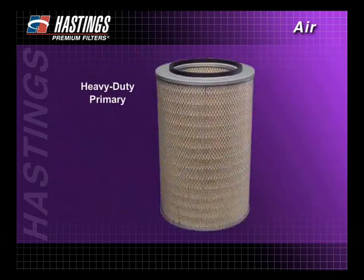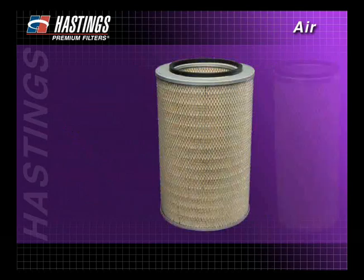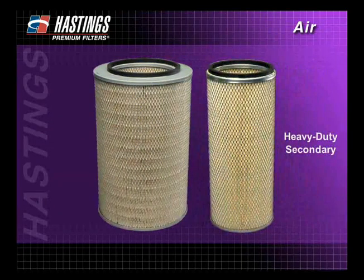There are several types of heavy duty air filters. Heavy duty filters include primary filters, which usually have metal ends and are available in both standard and long life models, and heavy duty secondary filters, which are used to seal out dirt while the primary filter is being serviced.